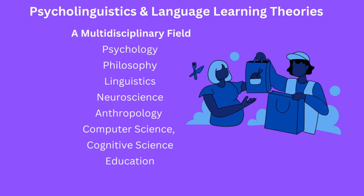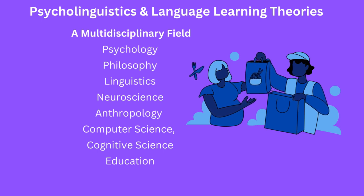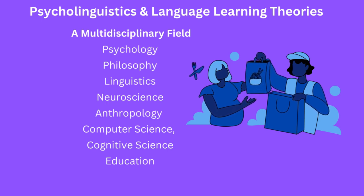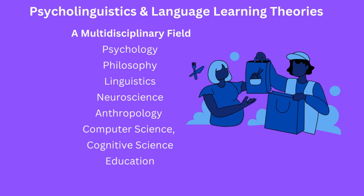Neuroscience is a key area of research in psycholinguistics as it helps to understand the neural mechanisms underlying language processing and production. Anthropology provides insight into how language and culture are intertwined and how different cultures have different ways of using and understanding language. Computer science and artificial intelligence have contributed by creating computational models of language processing and developing tools to analyze language data. Cognitive science is also a sub-discipline of psycholinguistics, encompassing psychology, linguistics, and neuroscience, and has contributed to understanding the cognitive processing involved in language. Finally, education plays an important role by helping to understand how children acquire language, how to teach second languages, and how to help children with language disorders.